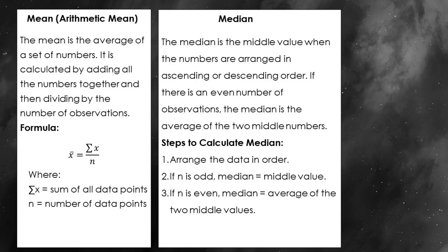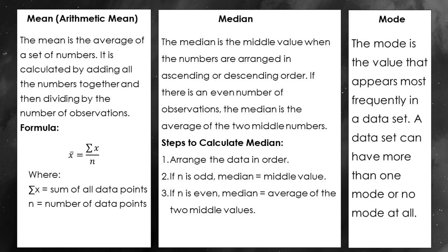The median is the middle value in a data set when the numbers are arranged in ascending or descending order. What's cool about the median is that it isn't affected by extreme values, unlike the mean. So in cases where you have an outlier, the median might actually give you a better idea of the central tendency of your data. Then we have the mode, which is the value that appears most frequently in a data set. It's great for categorical data or when you want to know what's most common in a set of numbers.